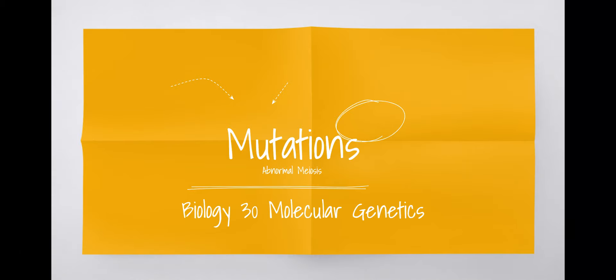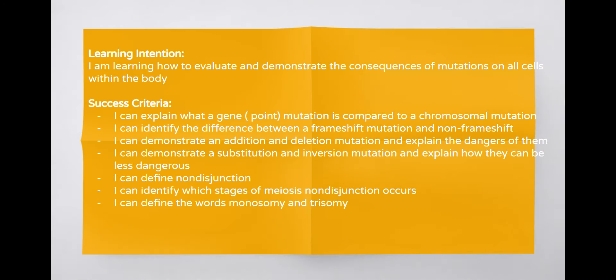Welcome to Bio 30, Mutations - Abnormal Meiosis. This is video two on mutations. Today we are going back into the learning intention of how to evaluate and demonstrate the consequences of mutations on cells. We're going to be able to define non-disjunction, identify the stages of meiosis when non-disjunction occurs, and define the words monosomy and trisomy.